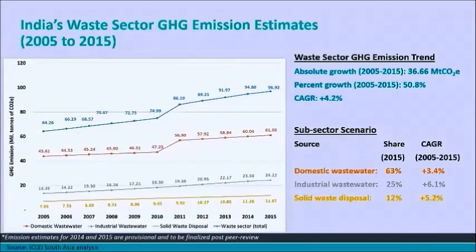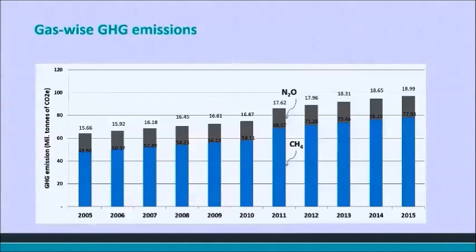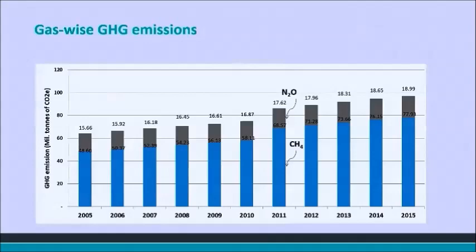In terms of gas-wise emissions: domestic wastewater when discharged into open water bodies generates some amount of N2O emissions, which is a small portion of the total. Mainly from the waste sector, CH4 emissions dominate and make up about 75% of emissions.